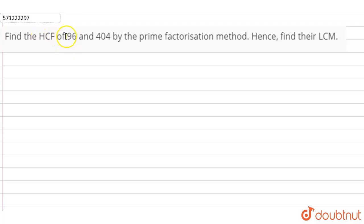the HCF of 96 and 404 by prime factorization method, and then find their LCM. So firstly, let's find the HCF of 96 and 404. We have to use the prime factorization method, so let's divide.